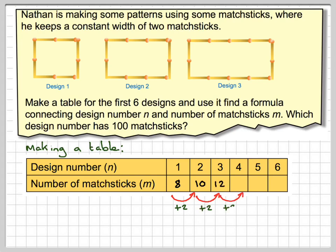This pattern carries on. So we're going to get 14, 16, and 18. So this is a linear sequence. 8, 10, 12, 14, 16, 18.